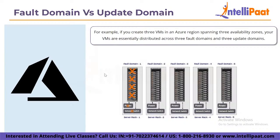For example, if you create three virtual machines in an Azure region spanning three availability zones, your virtual machines are essentially distributed across three fault domains and three update domains. If one of the availability zones fails for any reason, you still have two virtual machines from the other two availability zones. Similarly, if an update or patch is required, Azure schedules it at separate times for each availability zone. As a result, when the update is being done, only one availability zone is affected, while the other two zones are unaffected.